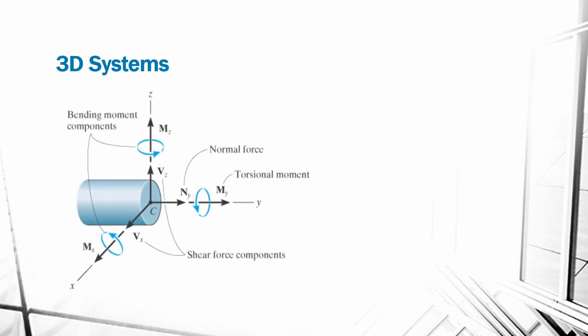In two-dimensional systems, we only have one normal component, one shear component, and one moment component. However, when we look at a three-dimensional system, we will have more components for forces and more components for moments. In the example, we have one normal force component, two shear force components, and three moment components. The normal force component will always act normal to the section cut. The two shear force components will act tangential to the section cut. In the case of moments, if the moment acts along an axis that is tangential to the section cut, it is called a bending moment. If the moment acts normal to the section cut, it is called a torsional moment.